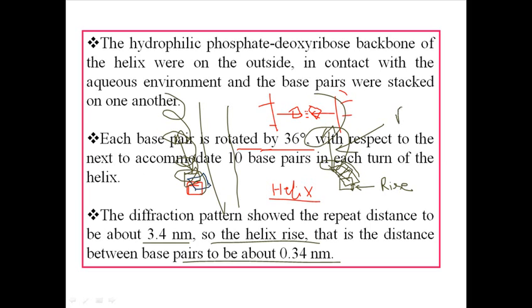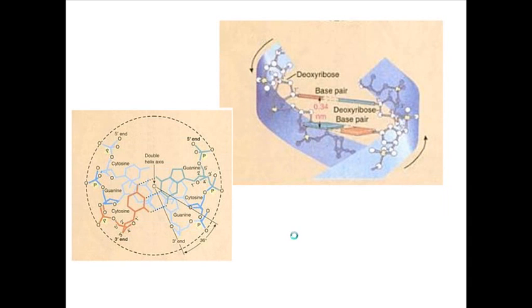The helix pitch is 3.4 nanometers and it contains approximately 10 base pairs — some books say 10.4, some say 10.5, but in round figures it is 10. That means the helix rise is 3.4 nanometers divided by 10, which equals 0.34 nanometers. So 0.34 nanometers is the helix rise — the distance between two adjacent base pairs.